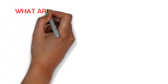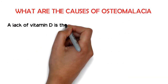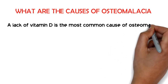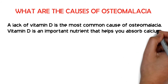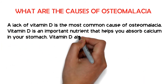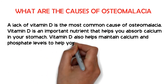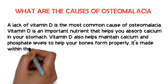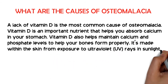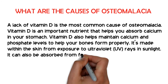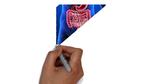A lack of vitamin D is the most common cause of osteomalacia. Vitamin D is an important nutrient that helps you absorb calcium in your stomach. Vitamin D also helps maintain calcium and phosphate levels to help your bones form properly. It's made within the skin from exposure to ultraviolet UV rays in sunlight.